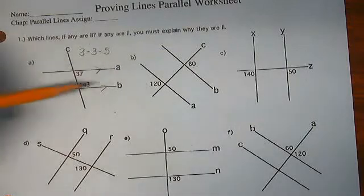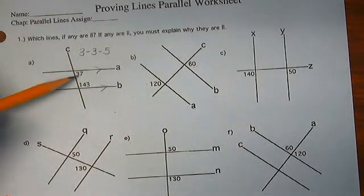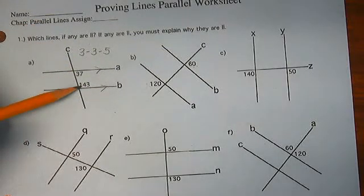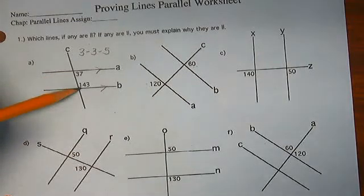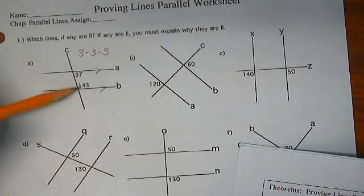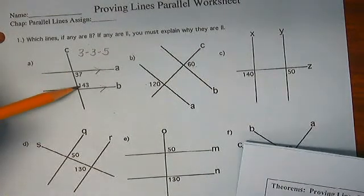Are these lines parallel? Well, let's see. We have 37 plus 143, which adds to 180. That makes them supplementary. Do we know anything about same side interior angles?